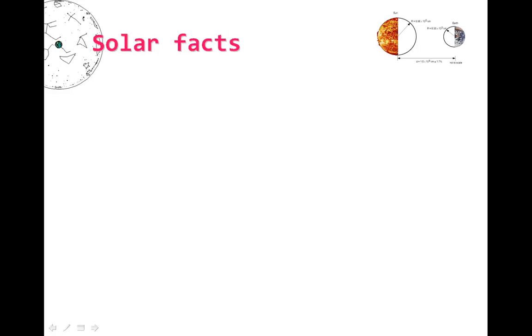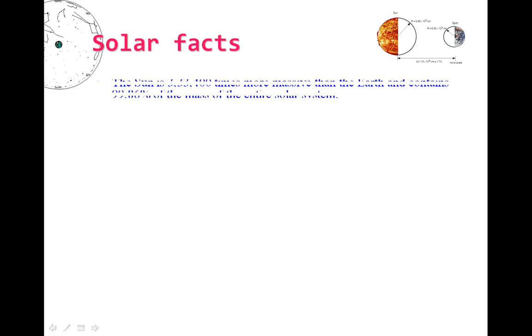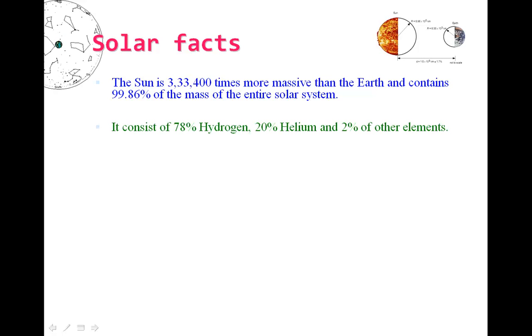Its mass is 333,400 times more than the Earth and occupies nearly 99.86% of the entire solar system. We can imagine the role of sun on the universe. Mainly the sun consists of hydrogen having 78%, and the others are 20% helium and 2% of other elements.